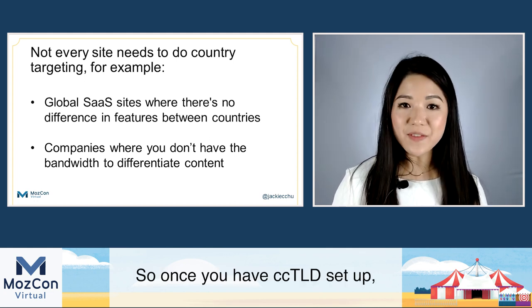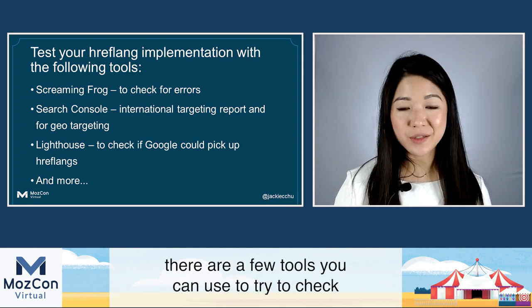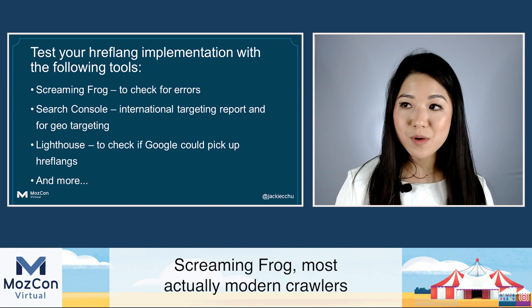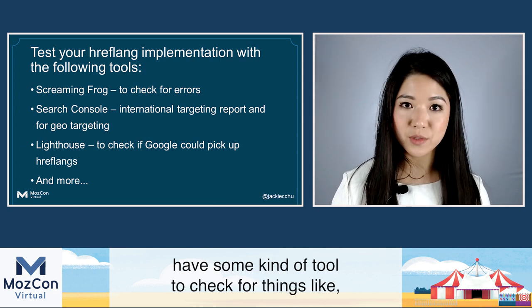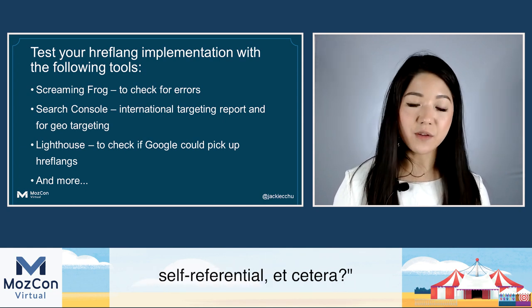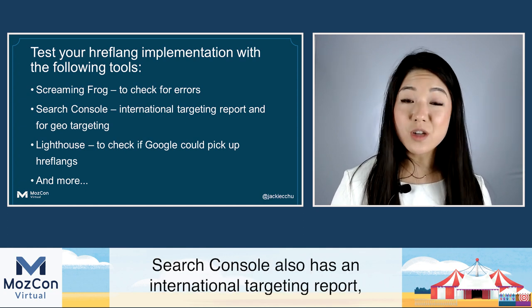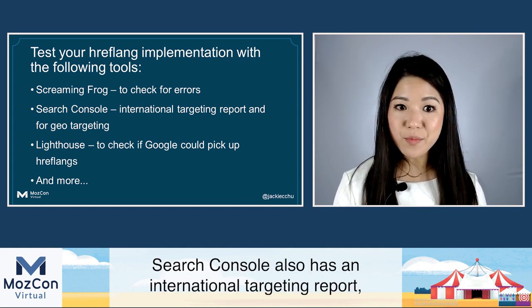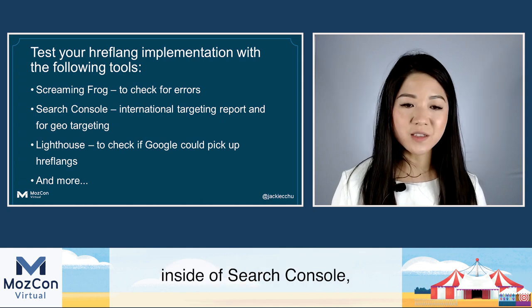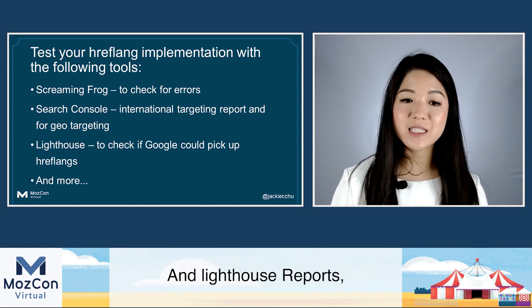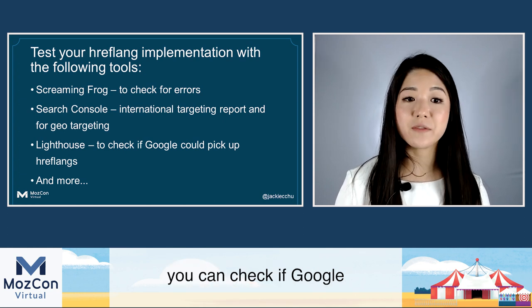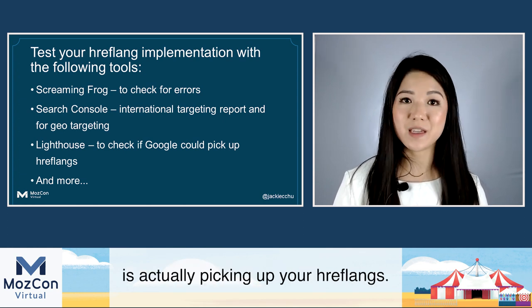Once you have hreflang set up, there are a few tools you can use to check if your implementation is correct. Screaming Frog and most modern crawlers have tools to check for things like reciprocal hreflang, self-referential tags, etc. Search Console also has an international targeting report, which is awesome — you can even do geo-targeting inside Search Console. Lighthouse reports also have an additional hreflang report where you can check if Google is actually picking up your hreflang.